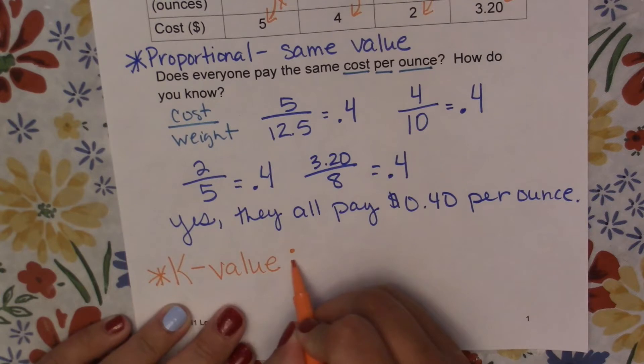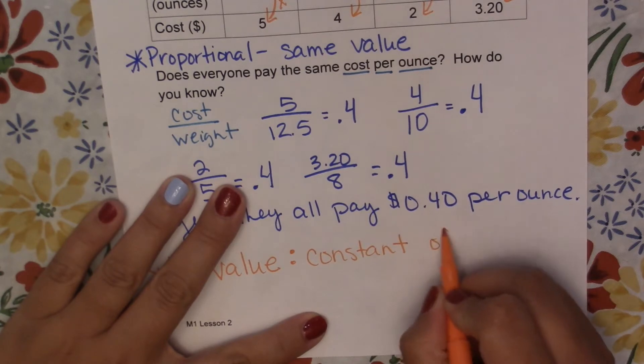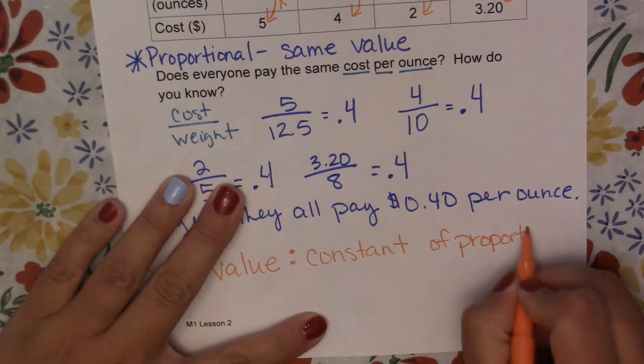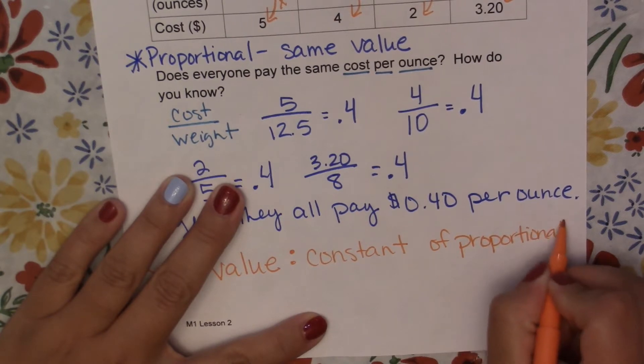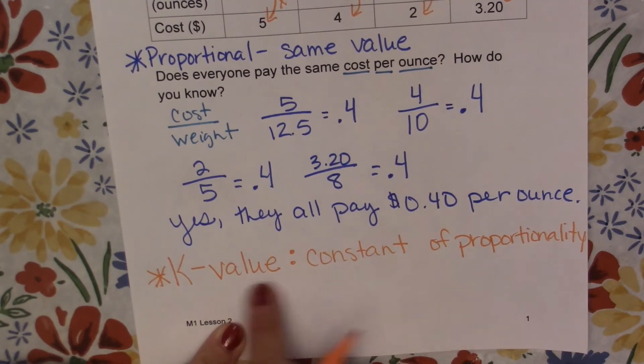Alright, so this K value is what we call our constant of proportionality. Constant of proportionality. Okay, so these two words mean the same thing.